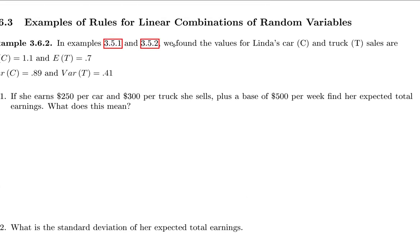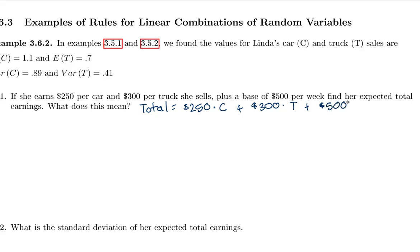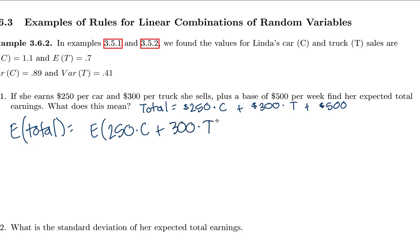In previous examples, we found values for Linda's car and truck sales. Expected value of cars is 1.1, expected value of trucks is 0.7, variance of cars is 0.89, variance of trucks is 0.41. She earns $250 per car and $300 per truck plus a base of $500 per week. The formula for her total earnings is: Total = 250·C + 300·T + 500.